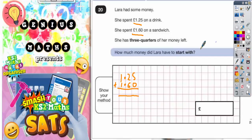So £1.25 add £1.60. 5 plus 0 is 5, 2 plus 6 is 8, and 1 plus 1 is 2. So so far she has spent £2.85. I'll even put the words 'so far' there.